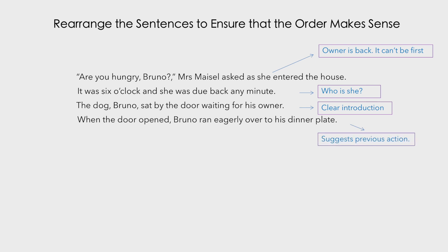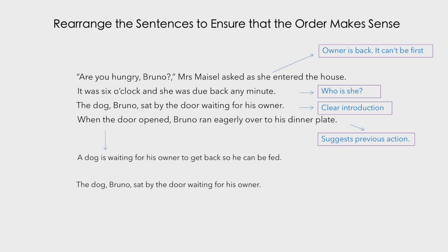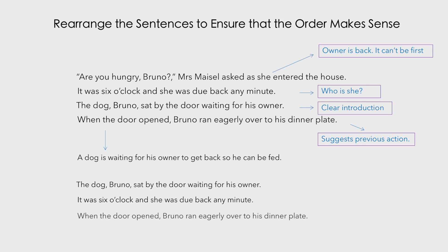So let's put the sentence we think goes first — our introduction: 'The dog Bruno sat by the door waiting for his owner.' The sentence that makes most sense next would be 'It was six o'clock and she was due back any minute,' because we know that 'she' is the owner. Then we have the idea of the dog running over to his dinner plate because the door has opened. That comes next because we haven't yet met the character Mrs Maisel. So: 'When the door opened Bruno ran eagerly over to his dinner plate.' The last sentence — Mrs Maisel has clearly seen an action suggesting Bruno is hungry. He must have run over to the dinner plate as she opened the door, and then as she's entering she asks the question.